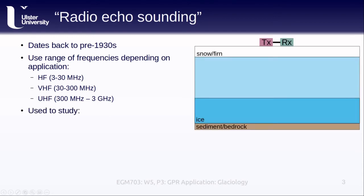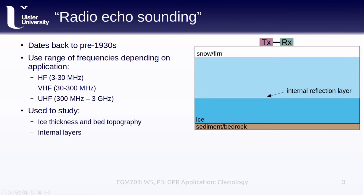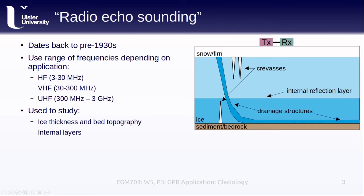In addition to ice thickness and bed topography, GPR has also been used to study internal layers within the glacier or ice sheet, crevasses at the surface or at the base of the glacier, drainage structures, including the presence of entire lakes underneath the ice sheets, and plenty of other things.